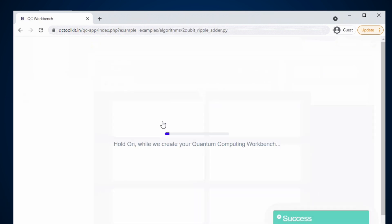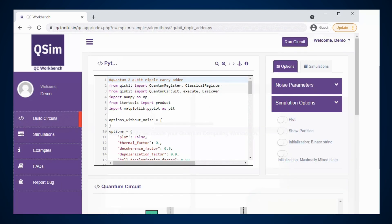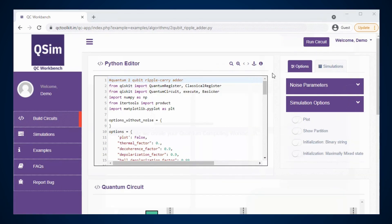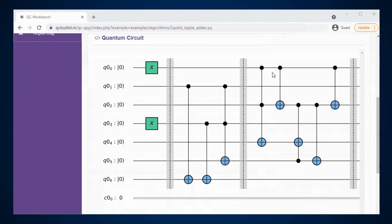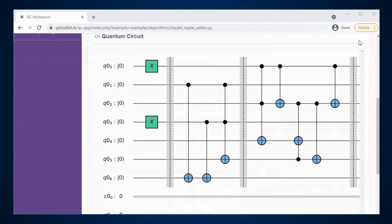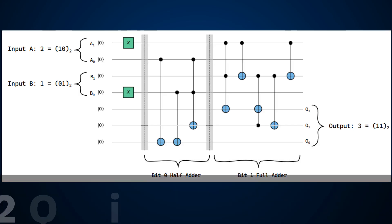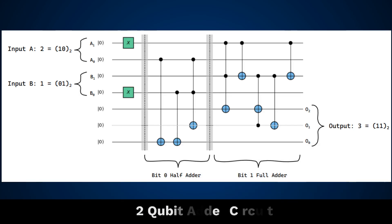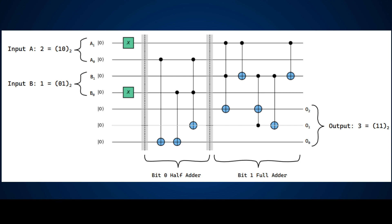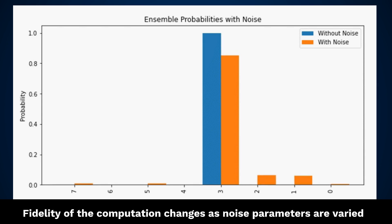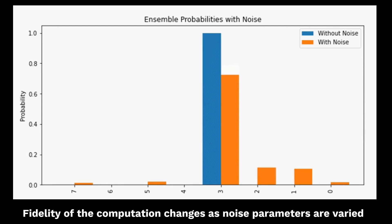QSim comes loaded with quantum programs and algorithms such as Grover's, Deutsch, QFT, and more to provide a head start to users. Consider an example of a binary addition algorithm — QSim helps to understand how the fidelity of the computation changes as noise parameters are varied.